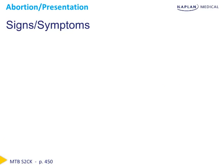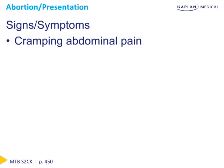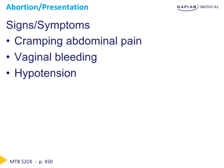The signs and symptoms seen with presentation of abortion should seem familiar after our discussion about ectopic pregnancy, which is why that workup is so important. The signs and symptoms include cramping, abdominal pain, vaginal bleeding, and potential vital sign changes such as hypotension and tachycardia, depending on the amount of blood loss.